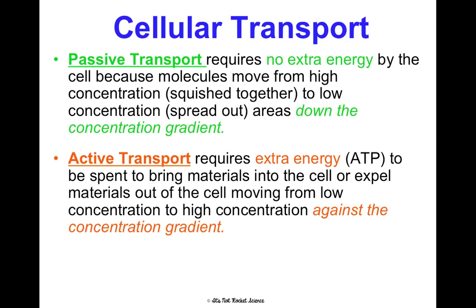Active transport requires extra energy in the form of ATP to bring things in or out of the cell, because it's moving from a low concentration to high — going against the gradient. Think: if you move from the bottom of the slide to the top, you're going against the gradient, and that's going to require energy to get to the top.